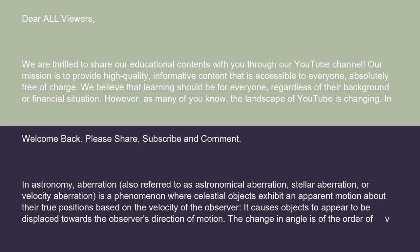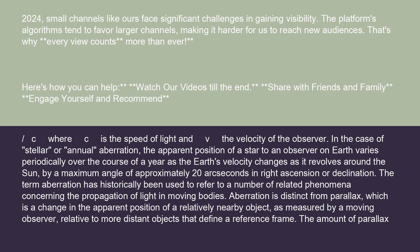In astronomy, aberration, also referred to as astronomical aberration, stellar aberration, or velocity aberration, is a phenomenon where celestial objects exhibit an apparent motion about their true positions based on the velocity of the observer. It causes objects to appear to be displaced towards the observer's direction of motion. The change in angle is of the order of v/c, where c is the speed of light and v the velocity of the observer.